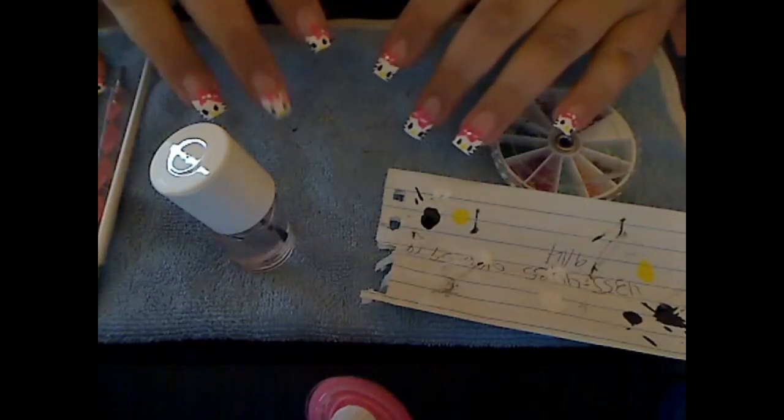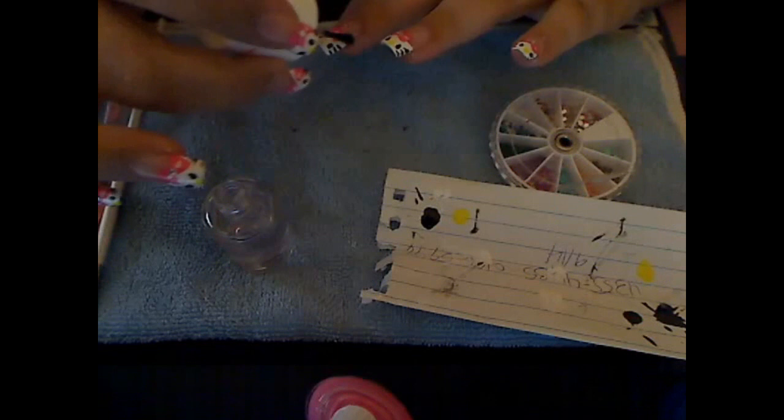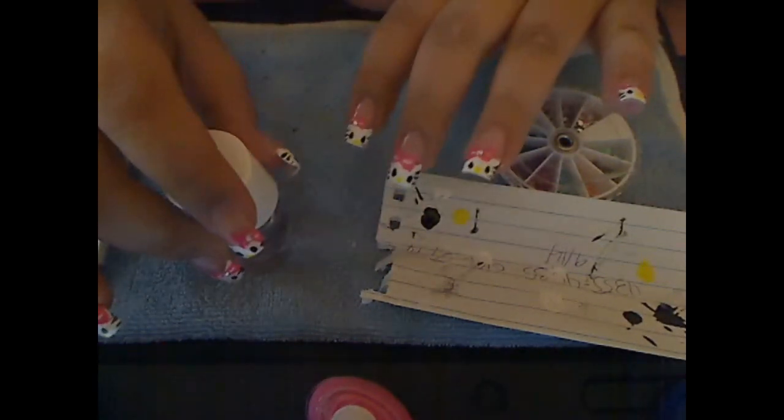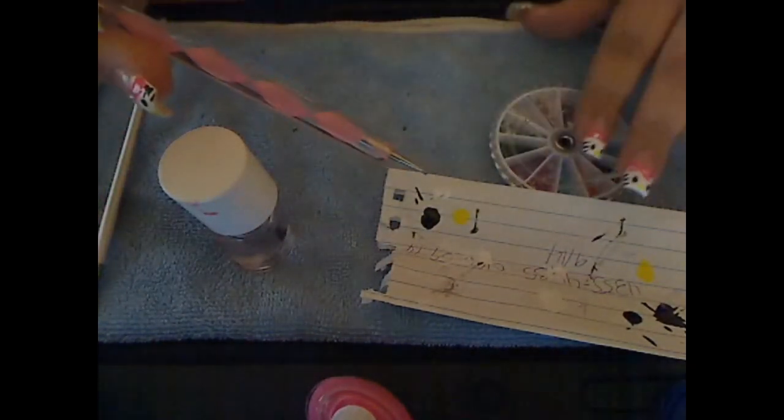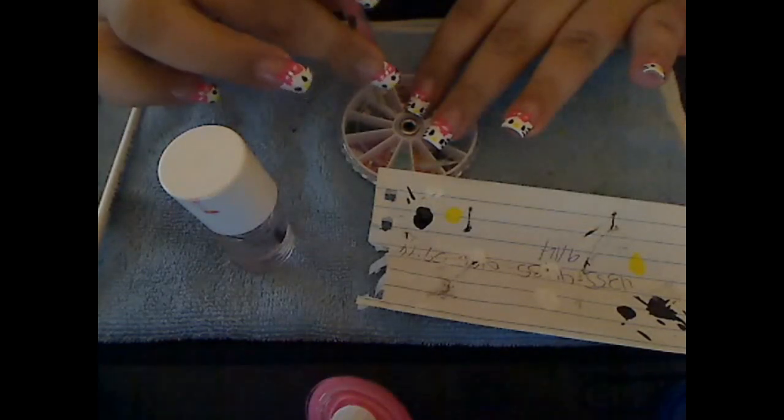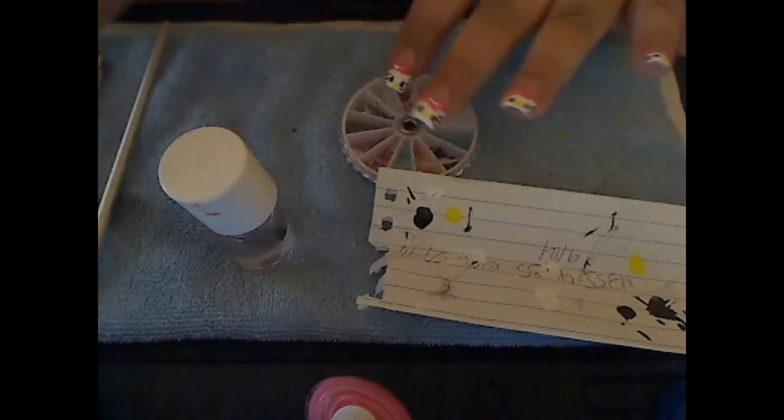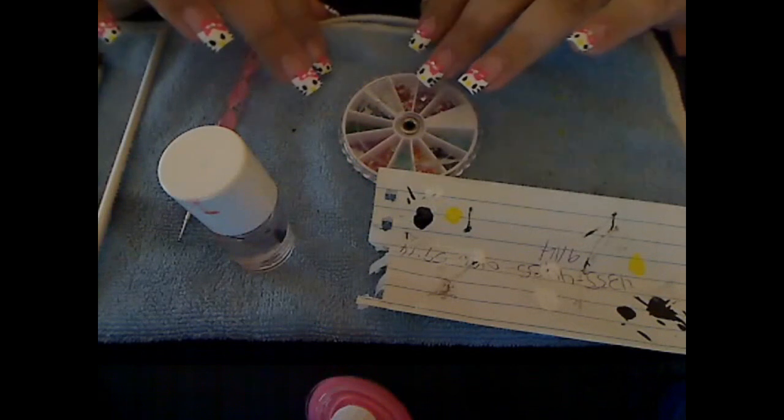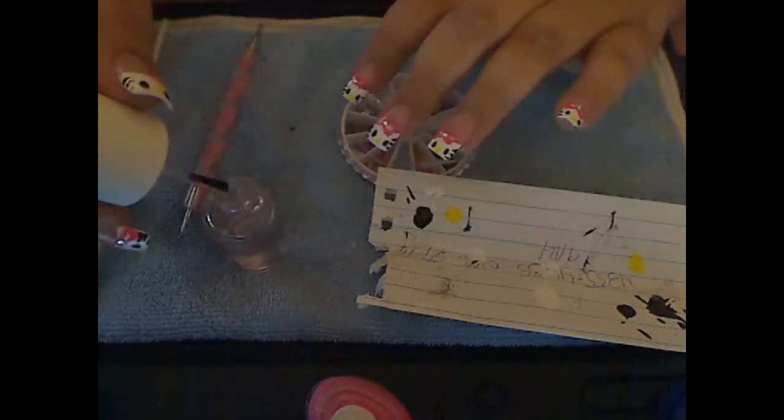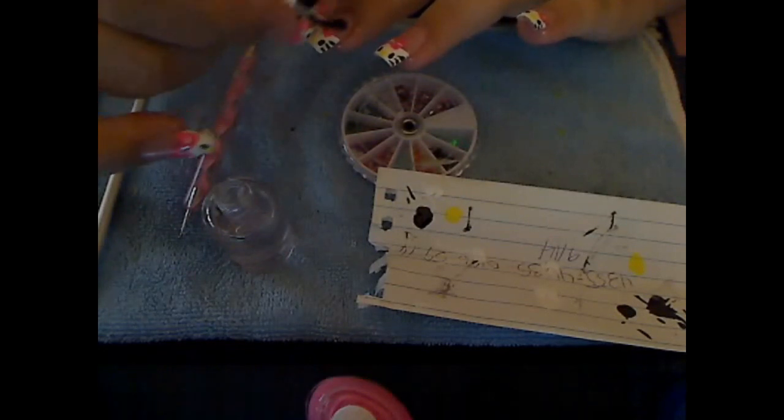Now that I have let my nail dry a little bit, I am going to do a coat of clear, really fast because you don't want it to smear. And then, getting a dotting tool, I am going to get a little clear rhinestone. Wait for it to dry a little bit. Now that I have let it dry, we are going to do another coat over the rhinestone so it can stick.